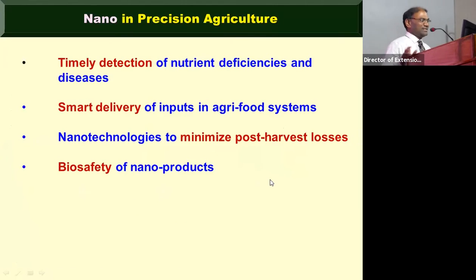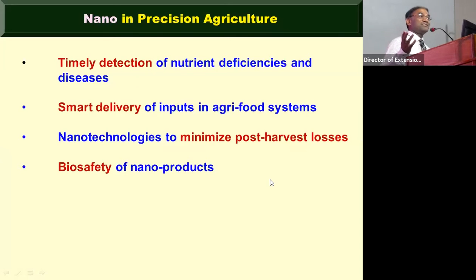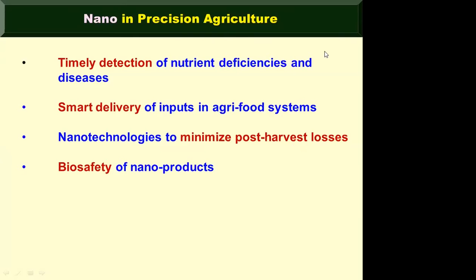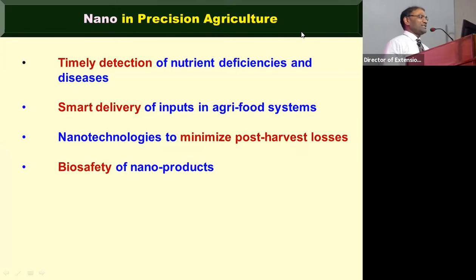Let me explain where exactly nanotechnology can be applied in agriculture. There are four areas: first, timely detection of nutrient deficiency, pests and diseases; second, smart delivery of inputs; third, post-harvest technology; and fourth, safety of nano products. I will now speak about each of these areas.